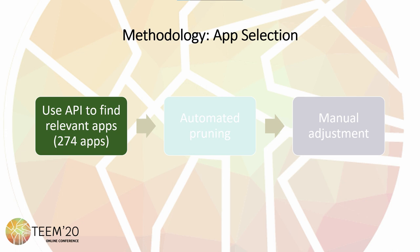With regards to methodology, a script was created to make use of Google Play Store's public API to generate a list of apps. This figure illustrates the flow of processes used to select candidate applications. The script ran multiple queries that tried to find learning applications for a predetermined set of languages and returned 274 potential applications.